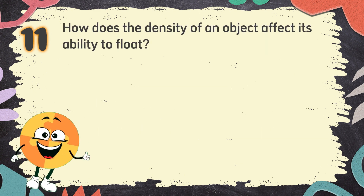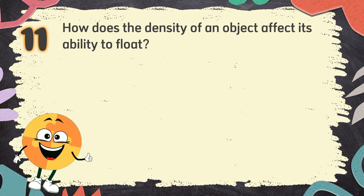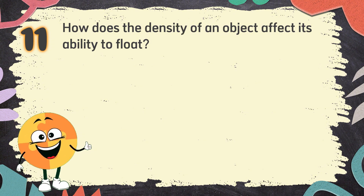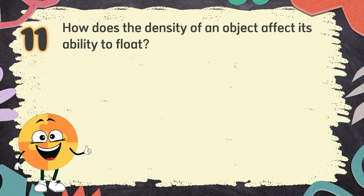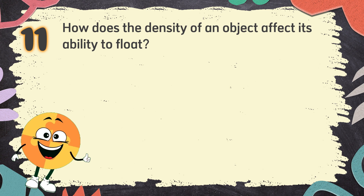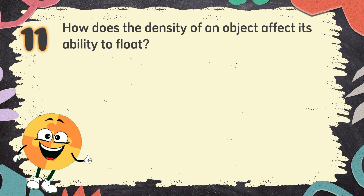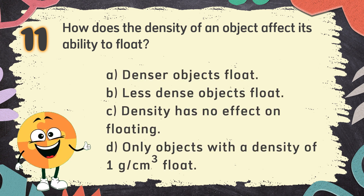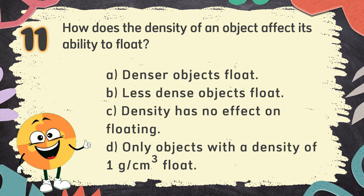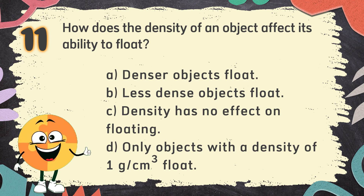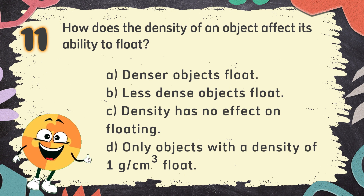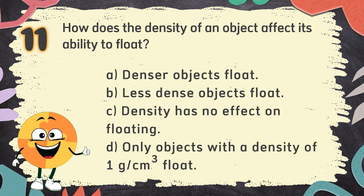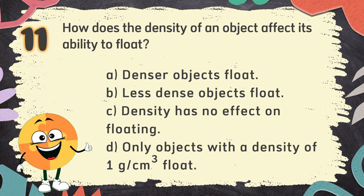Number 11. How does the density of an object affect its ability to float? The choices are: A. Denser objects float, B. Less dense objects float, C. Density has no effect on floating, D. Only objects with a density of 1 gram per cubic centimeter float.